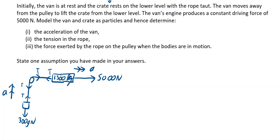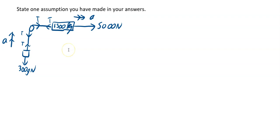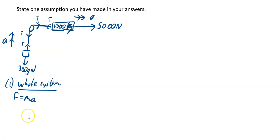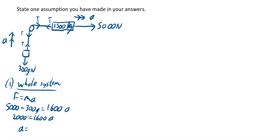So what we want to do for part one is find the acceleration of the van. I'm going to assume there's no resistance and I'm going to look at the whole system, and use F equals ma. So overall you've got 5000 — that's your pulling force. All of the T's cancel out, so you've just got 5000 minus 300g, and that's equal to your total mass. Your total mass is going to be 1600 times your acceleration. So 5000 minus 300 times 10 is going to be 2000, equal to 1600a. So if you do 2000 divided by 1600, you're going to get 1.25 metres per second squared. That is your acceleration.